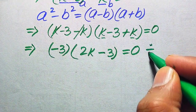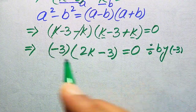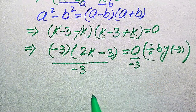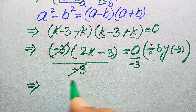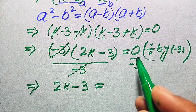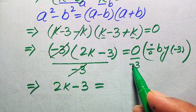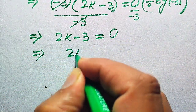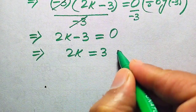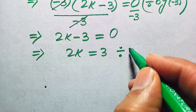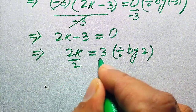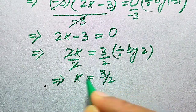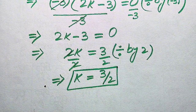Now we divide both sides by minus 3 to remove it from the left-hand side. The minus 3 cancels and we get 2k minus 3 equals 0, since 0 divided by any number is 0. Moving minus 3 to the right-hand side gives 2k equals 3. Dividing both sides by 2, the 2's cancel and we get k equals 3 over 2. This is the final value of k from this method.